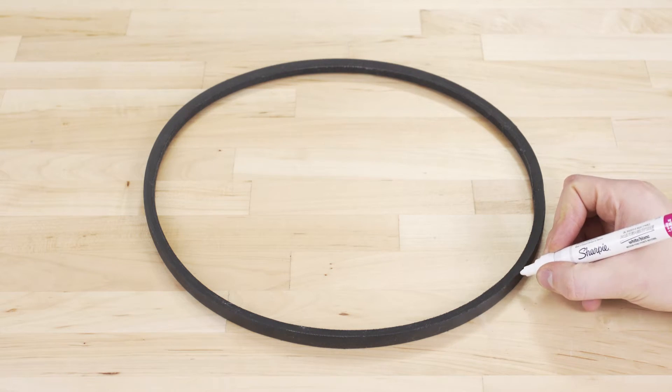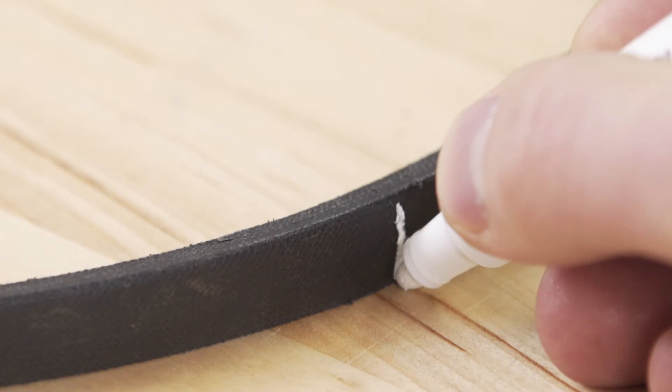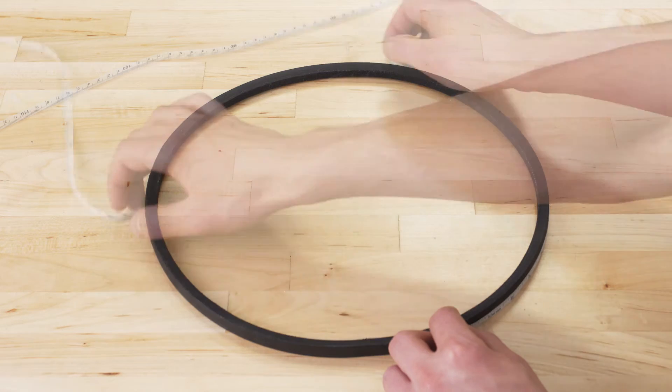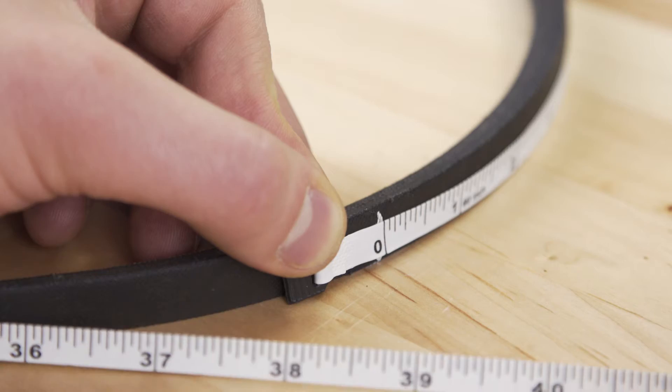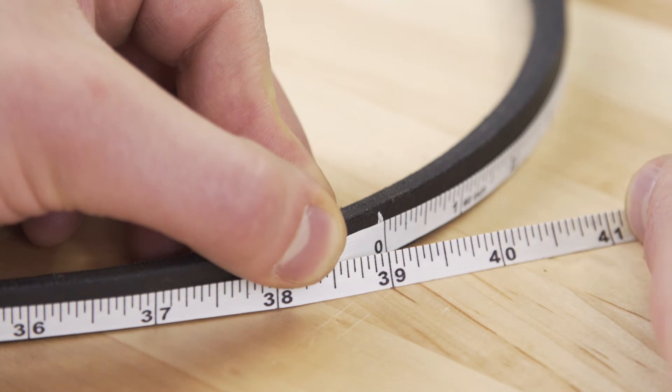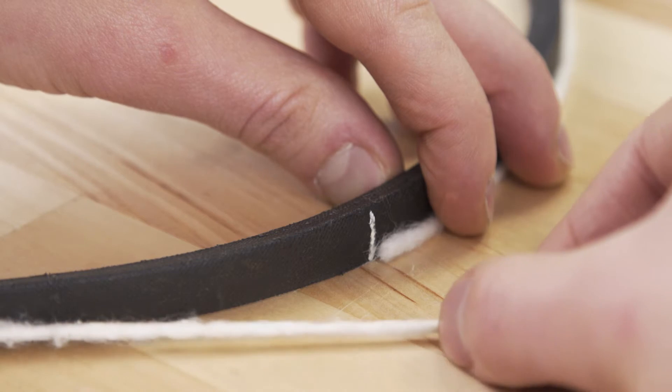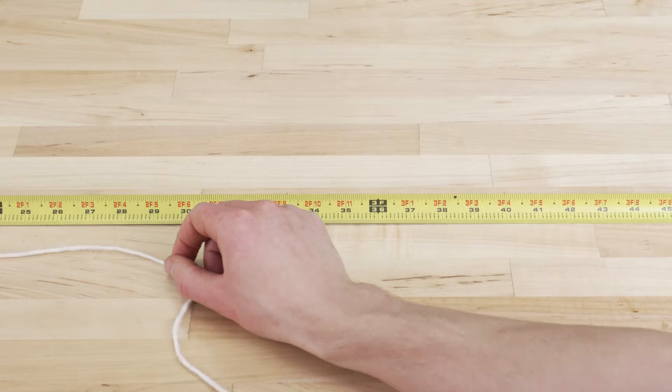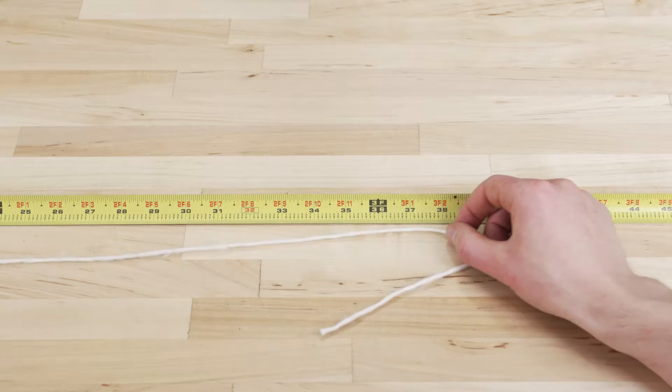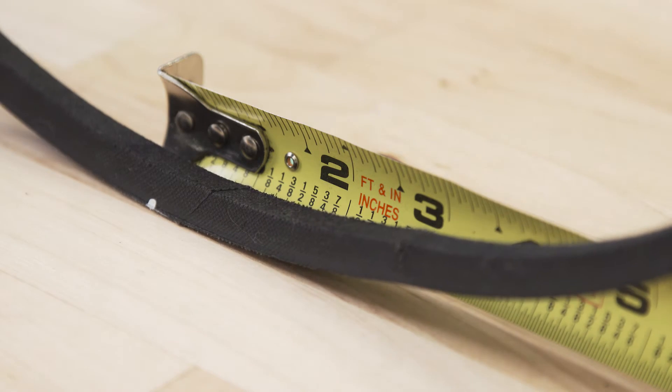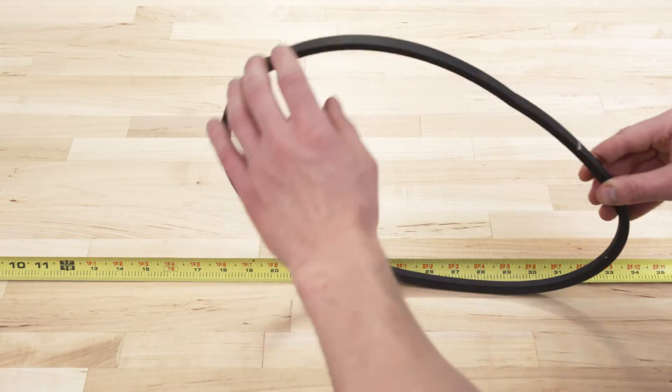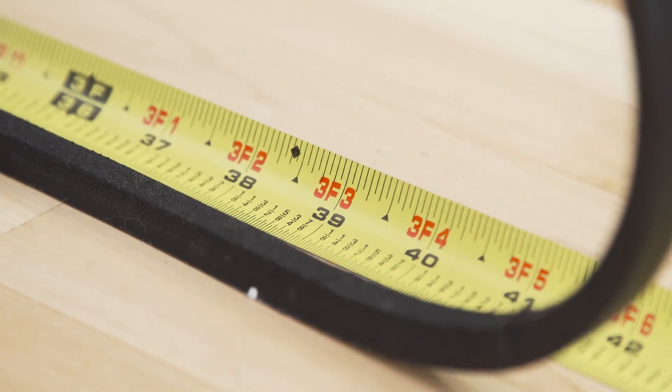Now make a mark on the belt to help measure the length. If you have a soft tape measure, it can be wrapped around the belt to get the outside circumference. Alternatively, you can use a piece of string to wrap around the belt and then measure the string. If you have no other options, align the mark with the start of the tape measure, then roll the belt until the mark touches again.